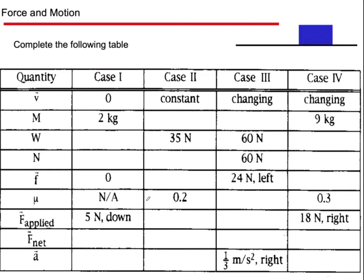Here's one of those fun AP-style problems. You've got an object sitting on a surface with four different cases. In case one, velocity is zero, mass is two kilograms, so weight is 20 Newtons. We're applying a force of 5 Newtons downward, which means if gravity is 20 Newtons, the normal force has to be 25 Newtons acting upward. Net force is zero, acceleration is zero.